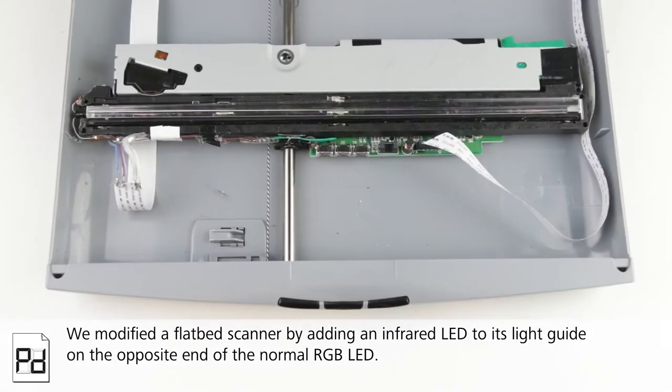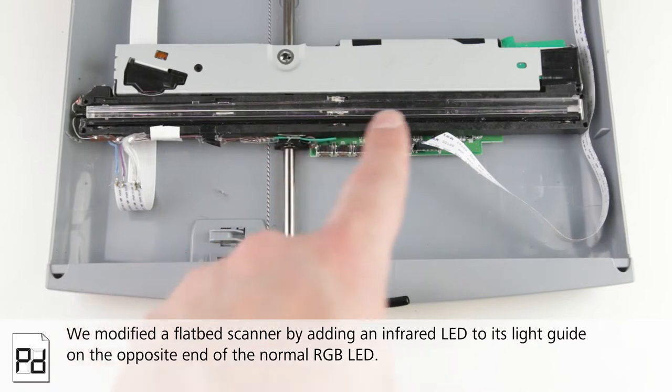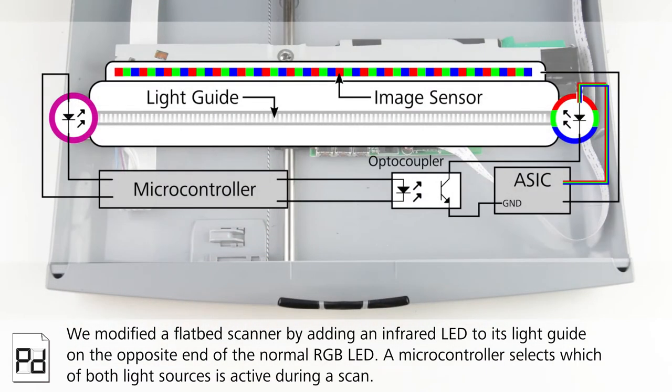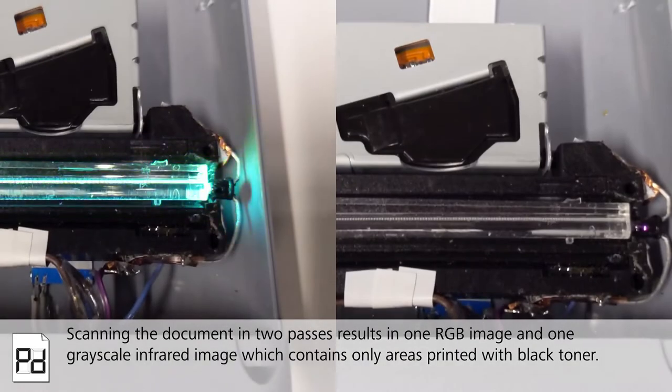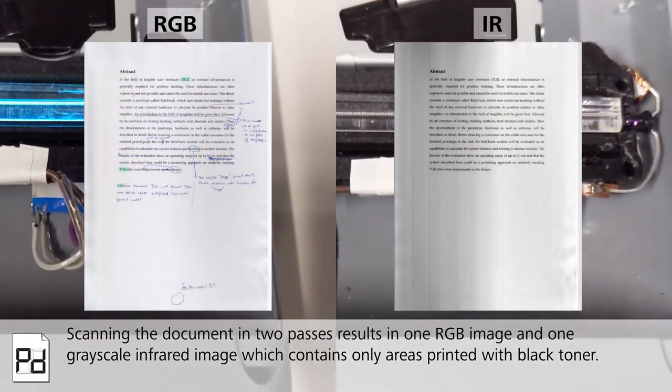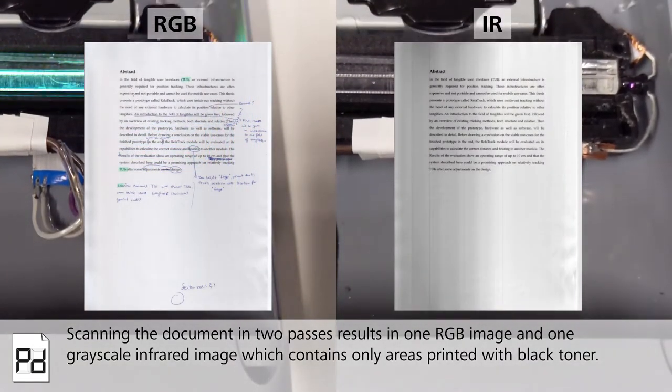We modified a flatbed scanner by adding an infrared LED to its light guide on the opposite end of the normal RGB LED. A microcontroller selectively switches which of both light sources is active during a scan. Scanning the document in two passes results in one RGB image and one grayscale infrared image which contains only areas printed with black toner.